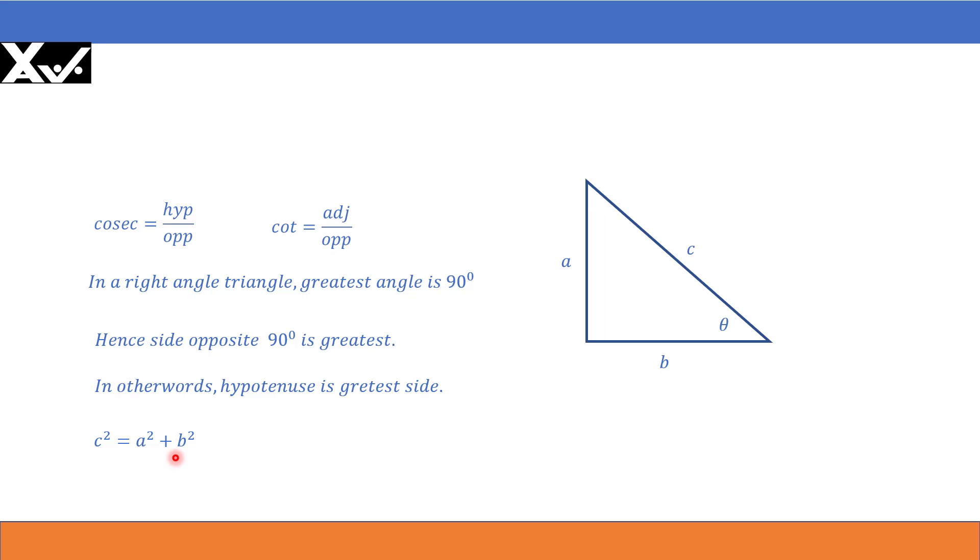C squared is equal to A squared plus B squared. That is the Pythagorean theorem. Using that also, we can say that C is greater than A and B. C is greater than A and C is also greater than B.